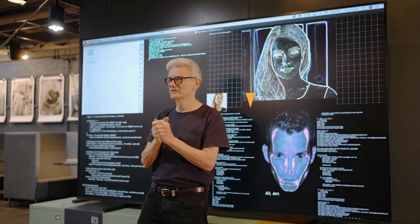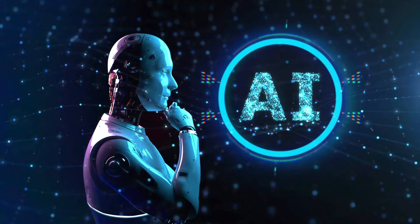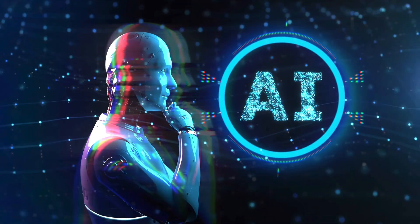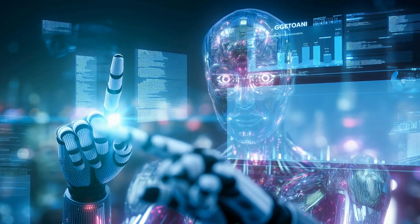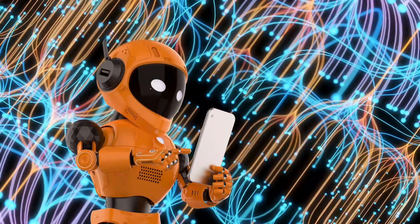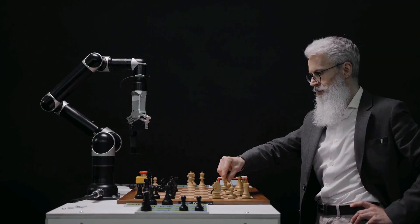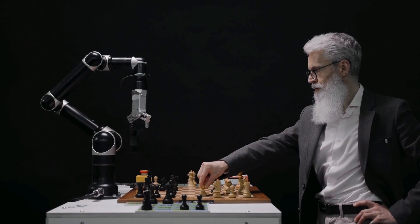The control problem represents perhaps the greatest challenge. How do we ensure that AGI systems remain under human control and aligned with human values? Once AGI systems can improve themselves, they might quickly become super-intelligent and beyond human ability to control or understand.